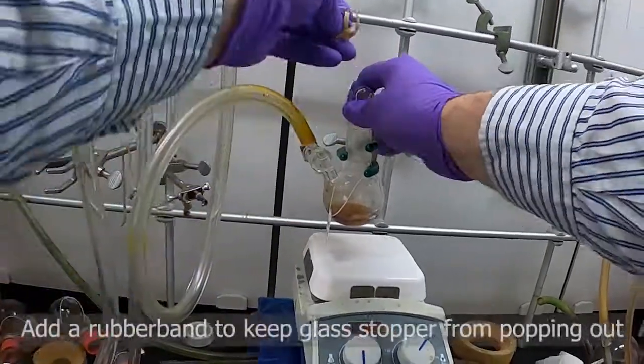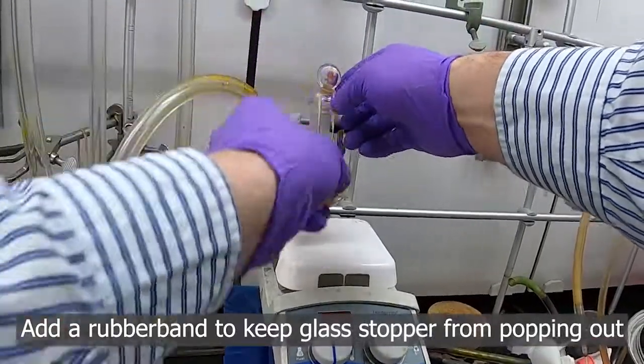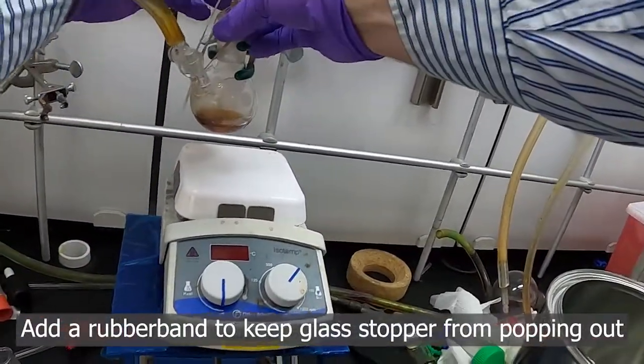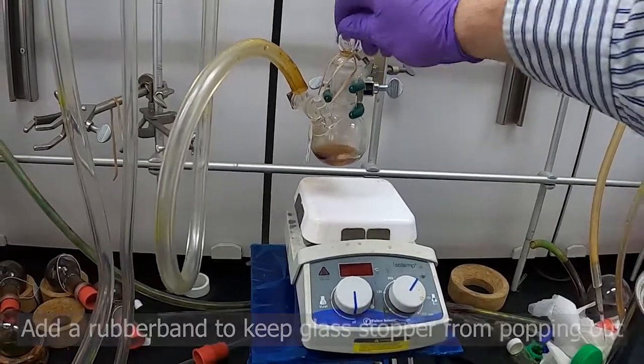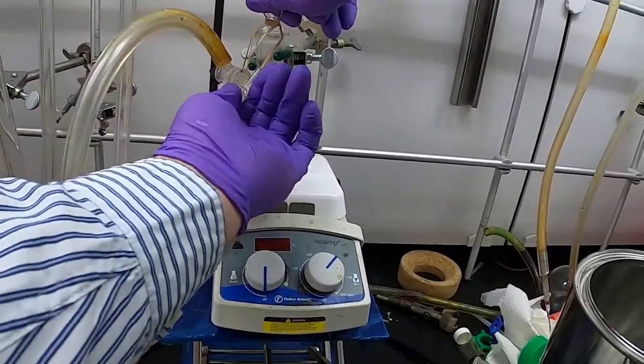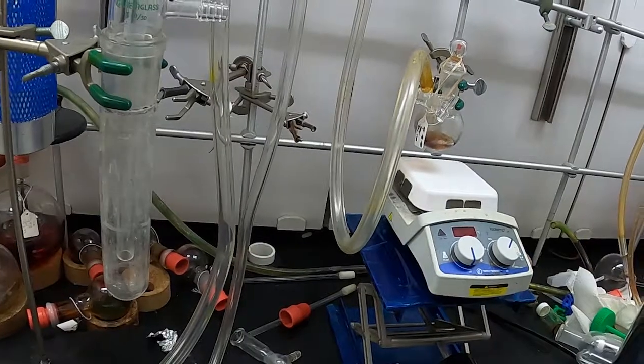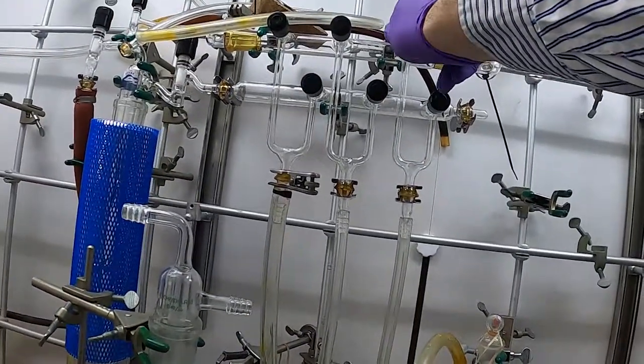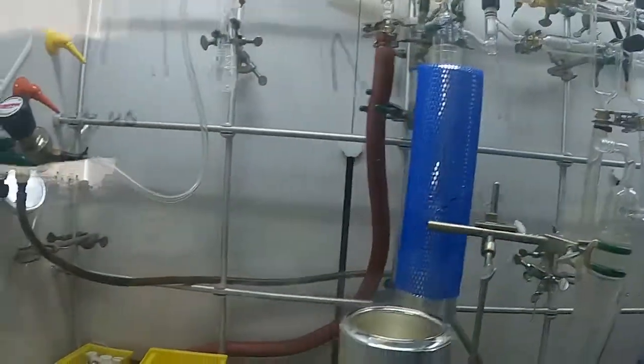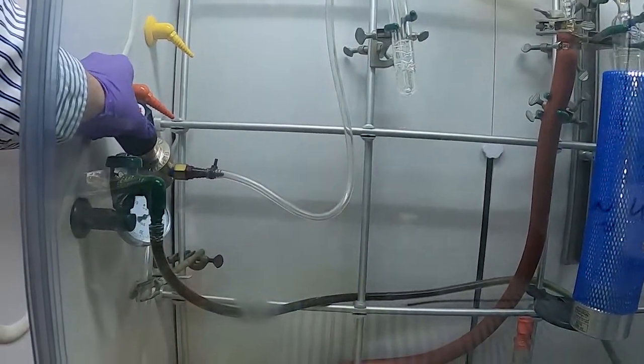The way we can hold that down is with a rubber band. There's a separate video on rubber-banding the flask. You want downward pressure to help hold that on. Then we close off the nitrogen, close off the line up here, close off our nitrogen flow, and turn back our gas a little bit over here.